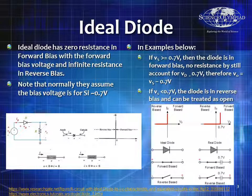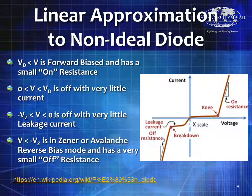Keep in mind most of the problems are for a silicon diode, so if you are going to put in the forward bias voltage it will be 0.7 volts. Let's talk about the linear approximation to a non-ideal diode. When your voltage is more than the turn-on voltage or the forward bias voltage, it has a small on-resistance — very small — so that curve goes very steeply straight up, on the order of less than an ohm or a few ohms.